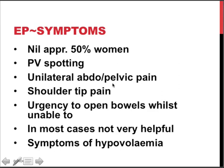Symptoms are fascinating: about 50% of women have no symptoms whatsoever apart from amenorrhea and a positive pregnancy test. Quite common is some spotting per vagina. If pain occurs it's usually lower abdominal and unilateral, in contrast to miscarriage pain which is more lower abdominal and crampy in nature. Shoulder tip pain would point at irritation of the phrenic nerve, indicating blood in the abdominal cavity touching the diaphragm. Urgency to open the bowels while unable to is a rare symptom of a blood clot in the pouch of Douglas.